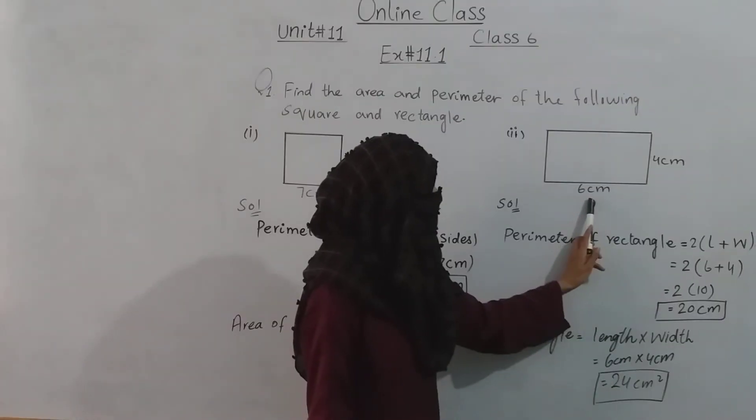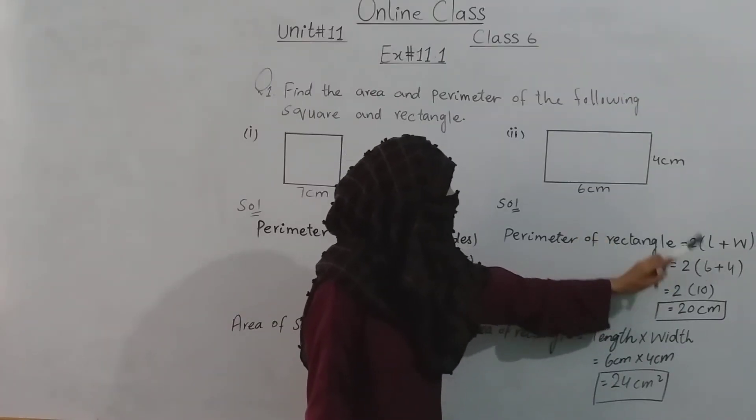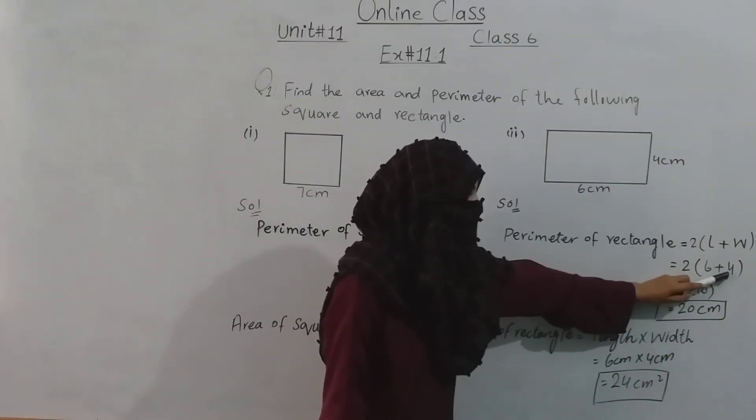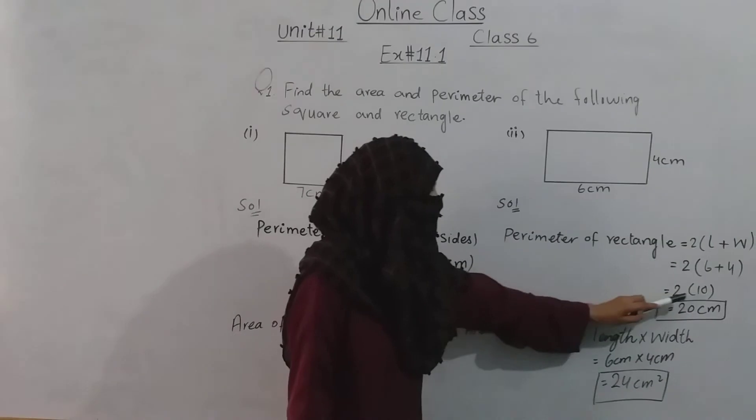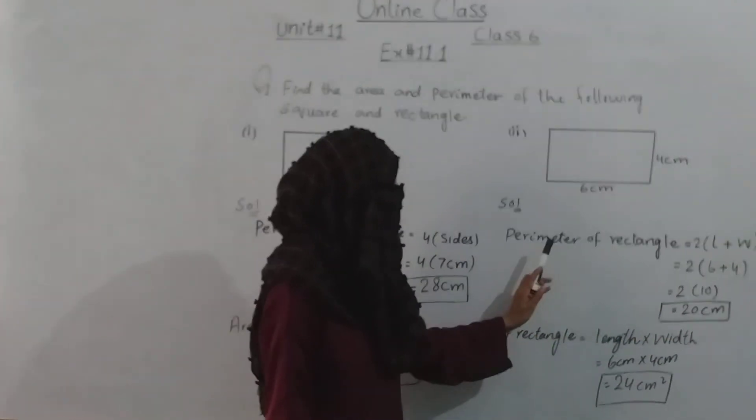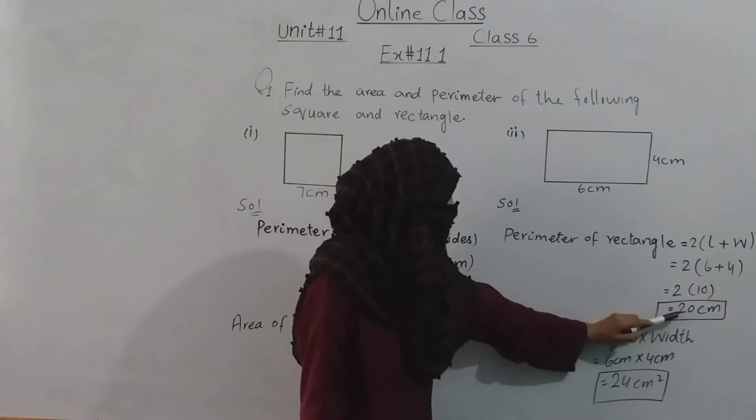We have length equals six centimeters and width equals four centimeters. First, six plus four equals ten. Ten multiplied by two gives us twenty centimeters. So the perimeter of the rectangle equals twenty centimeters.